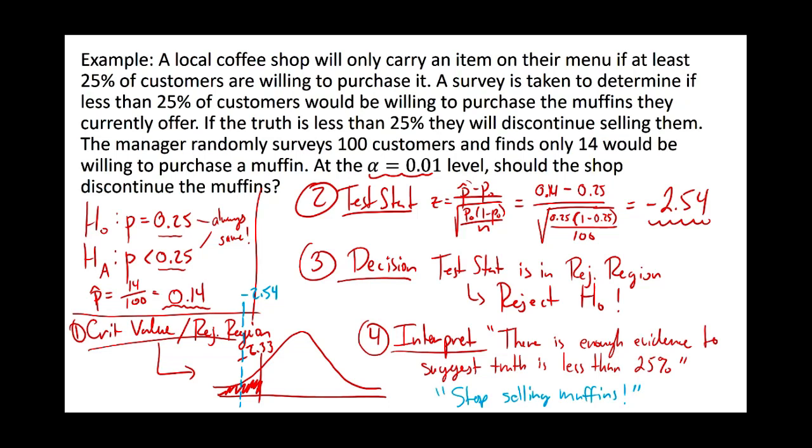The general idea behind hypothesis tests is that you get a test statistic, compare it to some critical value, and if that test statistic is too extreme, that's good evidence the claim probably isn't true — and that's when you reject. This was a one-sided, or left-tailed, test because the alternative was less than. It's treated slightly differently with a two-sided test.